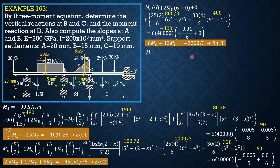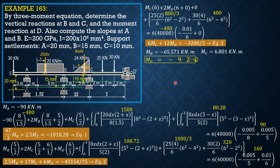Solving these three equations simultaneously, we have MB equals negative 65.571 kilonewton meter, MC equals positive 6.801 kilonewton meter, and MD, which is required, is negative 92.089 kilonewton meter.